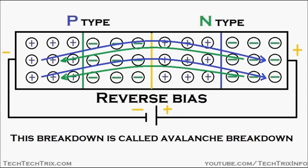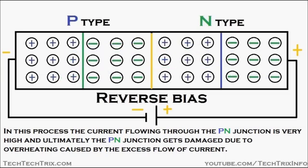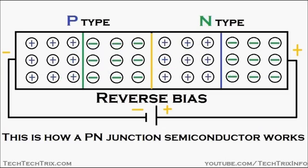This breakdown is called avalanche breakdown. In this process, the current flowing through the PN junction is very high, and ultimately the PN junction gets damaged due to overheating caused by this excess flow of current.